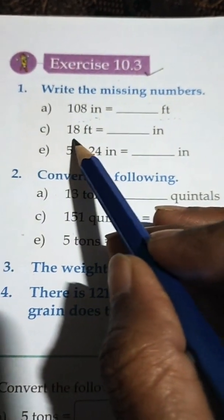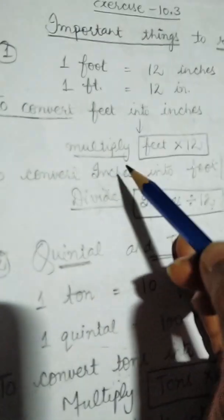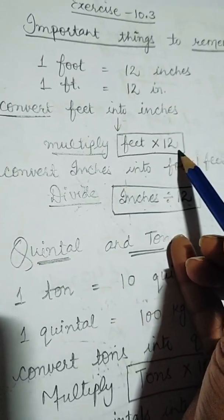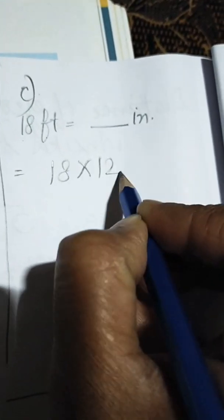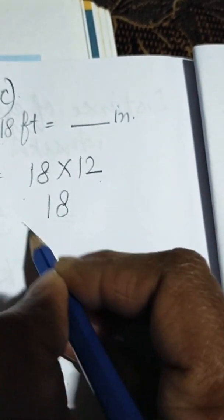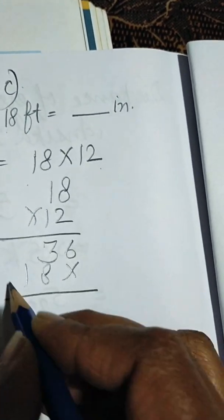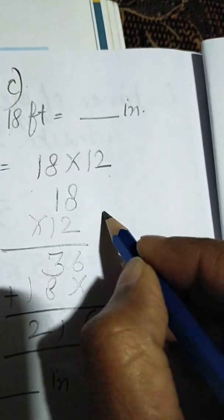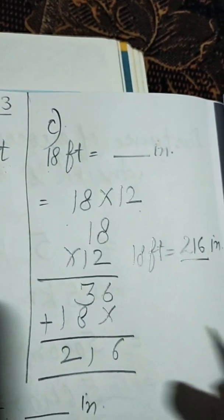Part (c): 18 feet is equal to how many inches? As noted in the important things, whenever we convert feet into inches, we multiply feet by 12. So here, 18 feet multiplied by 12 gives us 216. Therefore, 18 feet is equal to 216 inches.